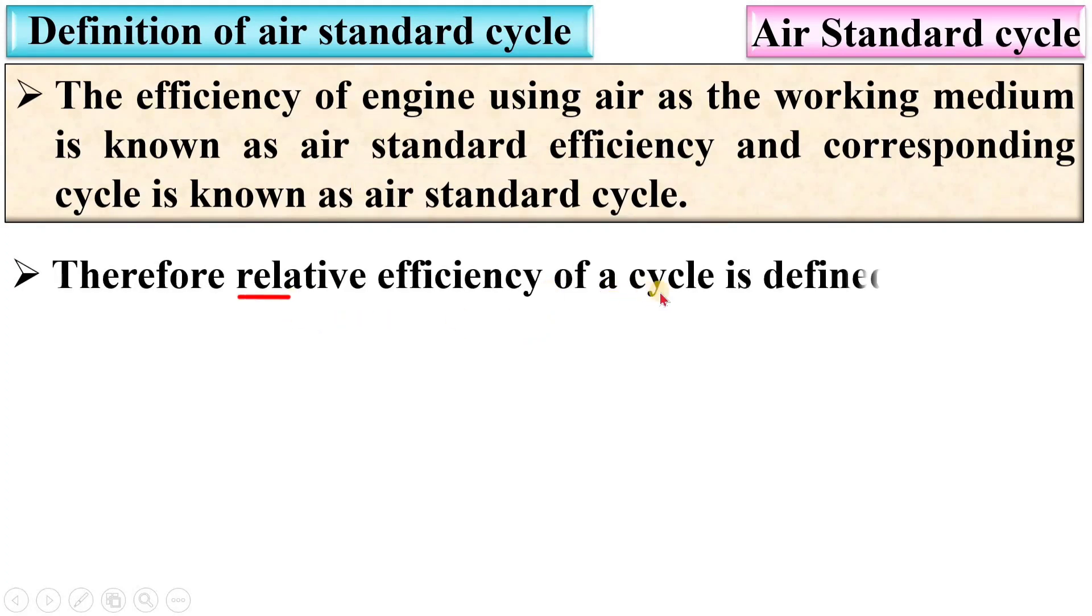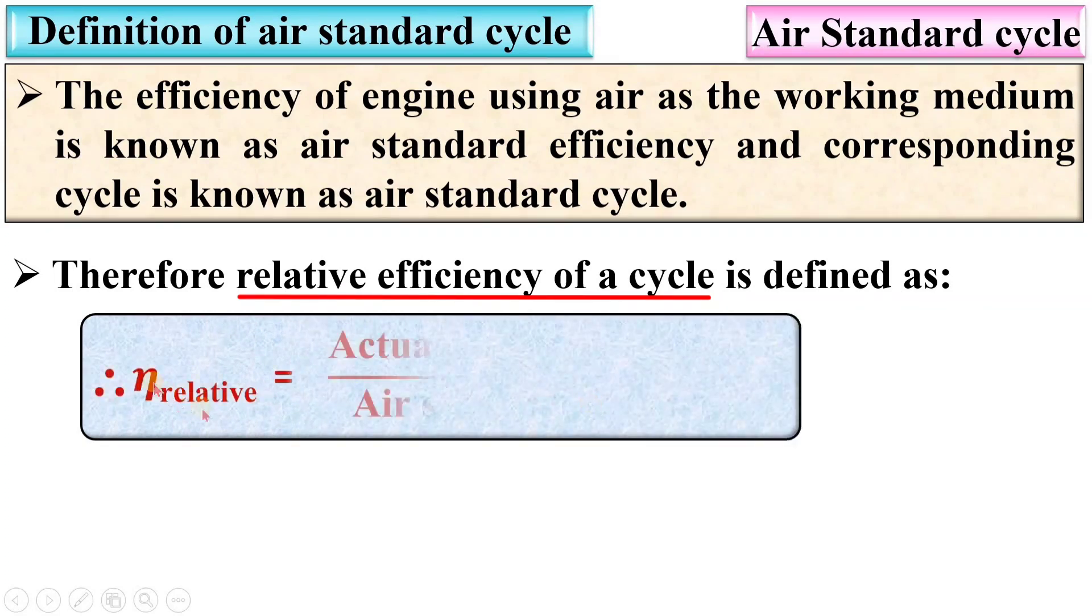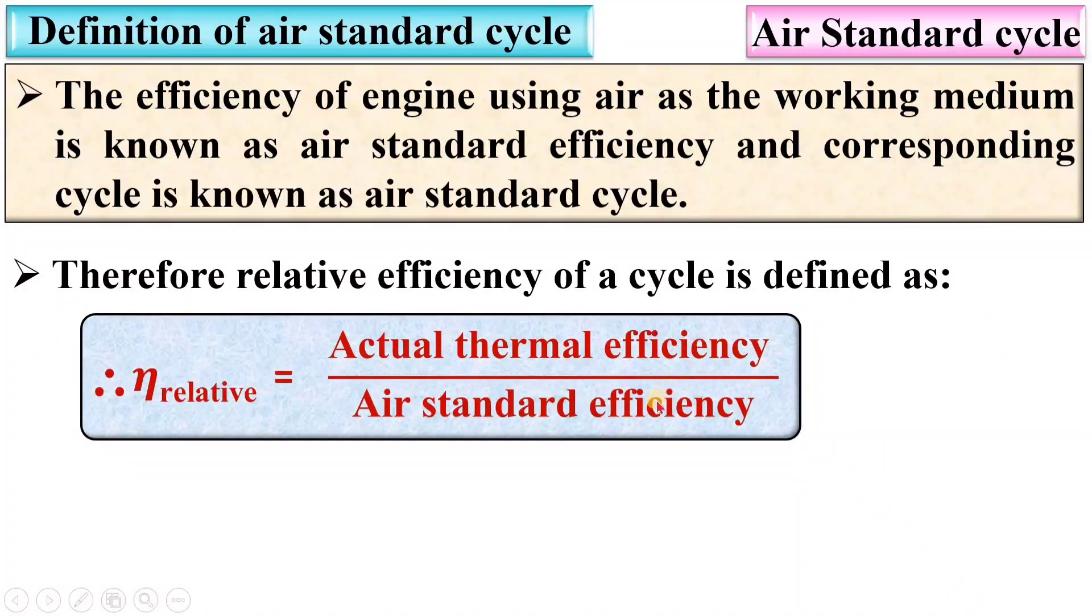Therefore, we can say relative efficiency of a cycle is defined as: η_relative = (Actual thermal efficiency) / (Air standard efficiency).